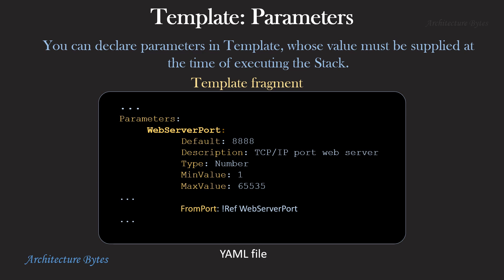Another useful template feature is parameters. If you want to provide a value to a property at the time of executing the stack, you can declare parameters in the template file and reference them in your resource section. In this example, we have declared web server port as a parameter with a default value of 8888, a description, type as number, and a minimum and max value. The web server port parameter is referred to elsewhere in the template, for example in a security group against the from port property. At the time of stack execution, web server port parameter value must be provided. However, if it is not provided, it defaults to the declared default value of 8888.